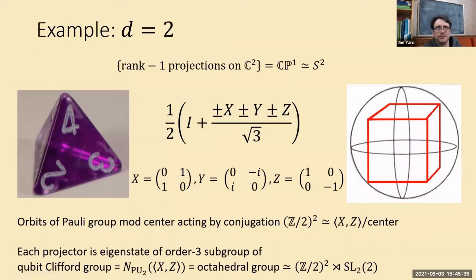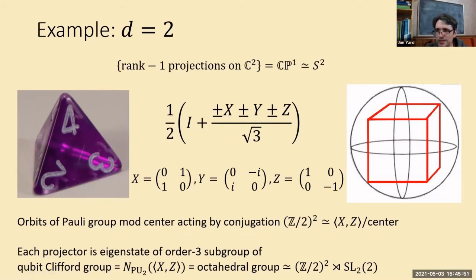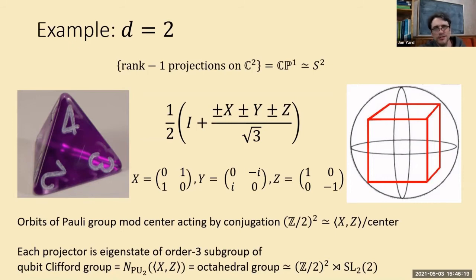There's a nice way to write the rank-one projections onto the four vectors using the three Pauli matrices σ_X, σ_Y, σ_Z, which form a basis for the traceless Hermitian 2×2 matrices. There are essentially two possibilities — two ways of putting this tetrahedron into the ball. These configurations are an orbit of the group Z_2 × Z_2 acting by the Pauli matrices by conjugation.